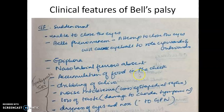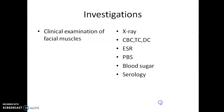Clinical features of Bell's palsy include sudden onset inability to close the eyes. Bell's phenomenon describes the eyeball moving upwards and outwards when the patient attempts to close the eye. Epiphora — watering of the eye — occurs because the eyelid cannot close properly. Other features include absence of nasolabial fold, accumulation of food in the cheek, dribbling of saliva, noise intolerance due to stapedius muscle paralysis, loss of taste due to chorda tympani damage, and dryness of eye and nose due to greater petrosal nerve damage.